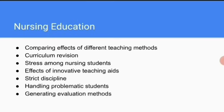The next scope area is nursing education. In nursing education, research can be applied in different aspects. Examples include: comparing effects of different teaching methods (such as online teaching, which is relatively new in nursing), curriculum revision, stress among nursing students, effects of innovative teaching aids, strict discipline, handling problematic students, and generating evaluation methods.